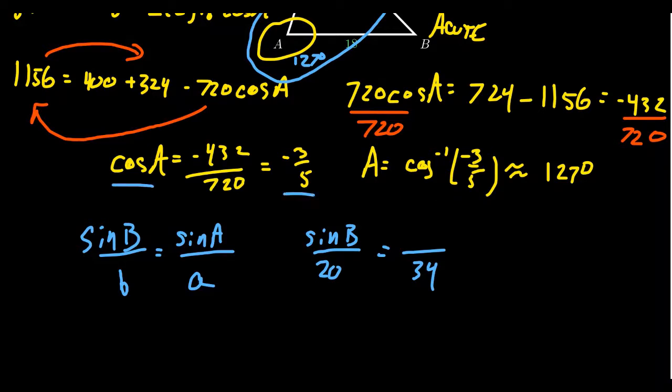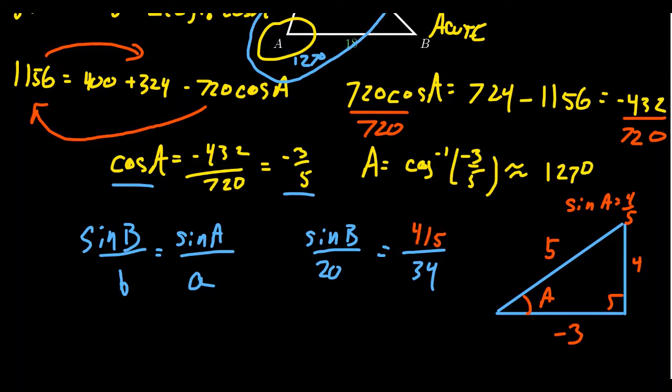We actually do know sine of A because cosine of A equals negative 3/5. We could use the approximation of 127, but when you use an approximation, the errors can compound over time. To make life cleaner, we can avoid this approximation by doing a right triangle diagram. We're thinking this is angle A. The cosine ratio is negative 3 over 5, which by the Pythagorean relationship, the other side would be 4. So if we did sine of A, sine of A would be 4/5 to avoid unnecessary rounding problems.